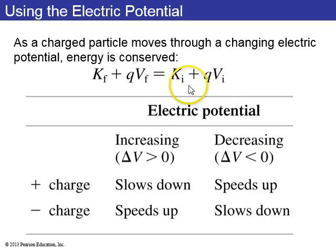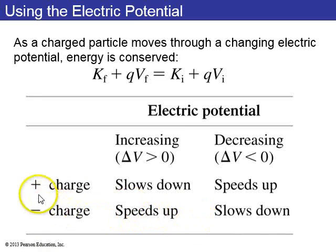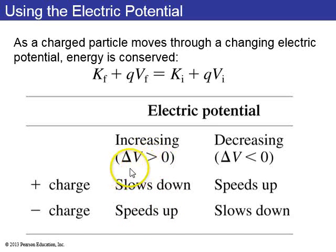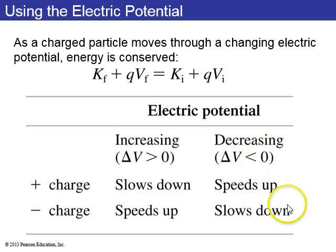This table from your text points out that negative charges do the opposite. A positive charge tends to speed up towards decreasing electric potential and slow down if electric potential is increasing. A negative charge will speed up towards increasing electric potential, and if it moves towards decreasing electric potential — a negative charge like an electron — it will slow down.